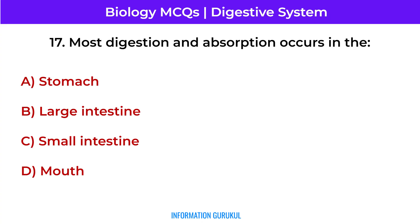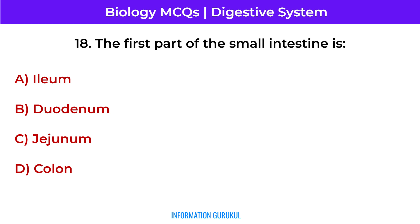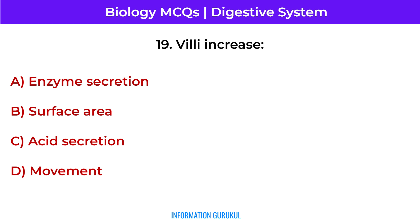Most digestion and absorption occurs in the small intestine. The first part of the small intestine is the duodenum. Villi increase surface area.